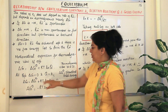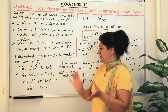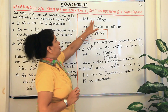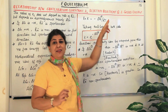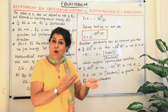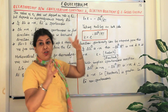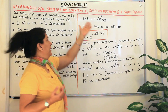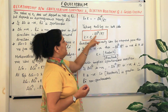Rearranging, ln(K) equals minus delta G-naught divided by RT. To remove the natural log, we take the anti-log of both sides, giving us K equals e to the power of minus delta G-naught upon RT. This is a very important equation.